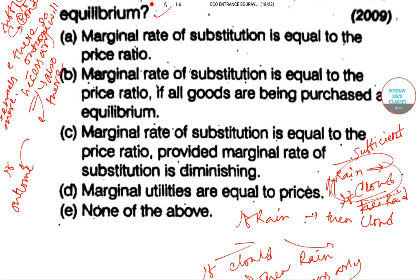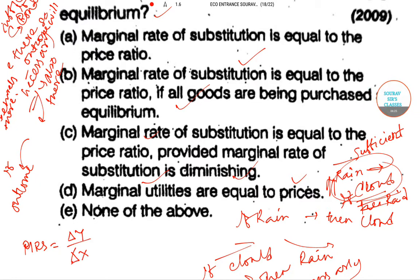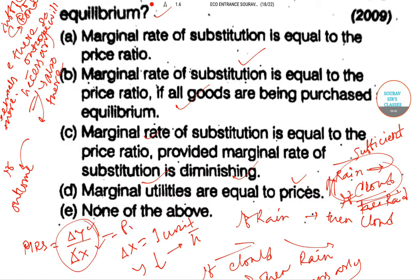The first option is that the marginal rate of substitution (MRS) is equal to the price ratio, provided it is diminishing, and that the marginal utilities are equal to the price ratio. MRS means: if we want to raise x by one unit, how much y must we sacrifice to keep utility constant?